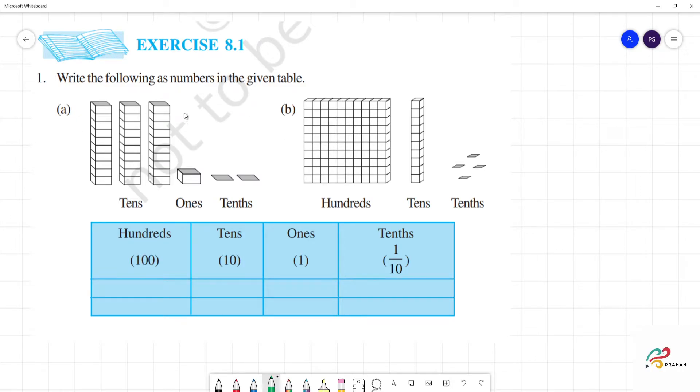Write the following as numbers in the given table. Okay, so we have a figure to get the number one-tenths and one-tenths we will write the table. First a1, so first we can do a1. Math hundreds, here we have hundreds, here tens, ones, tenths.